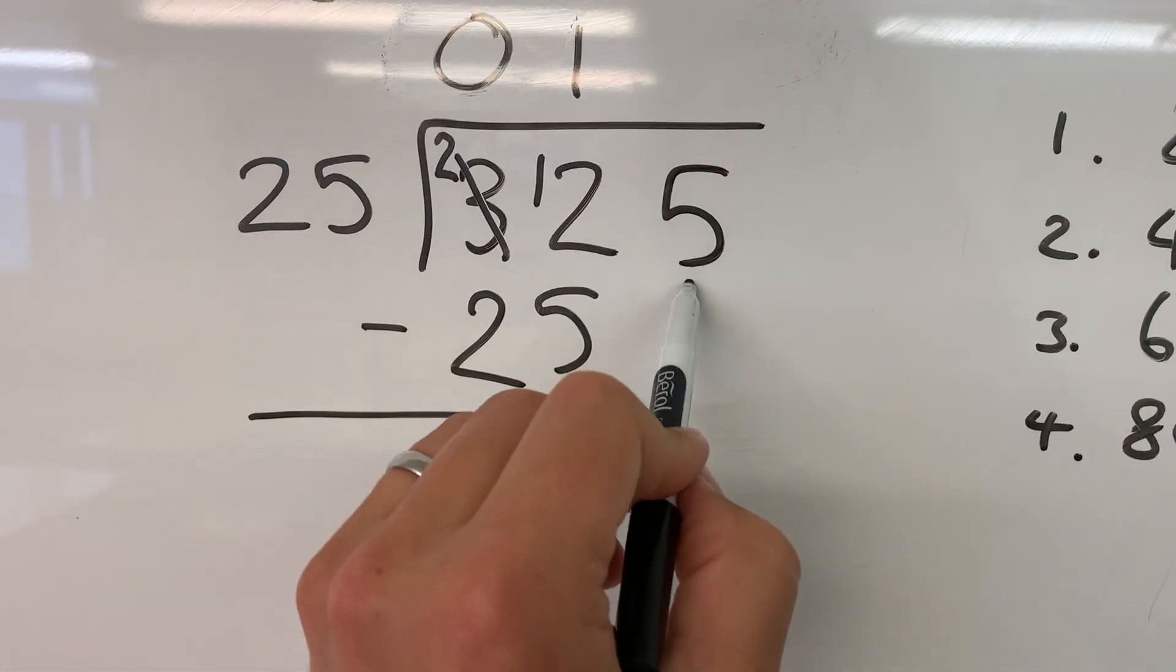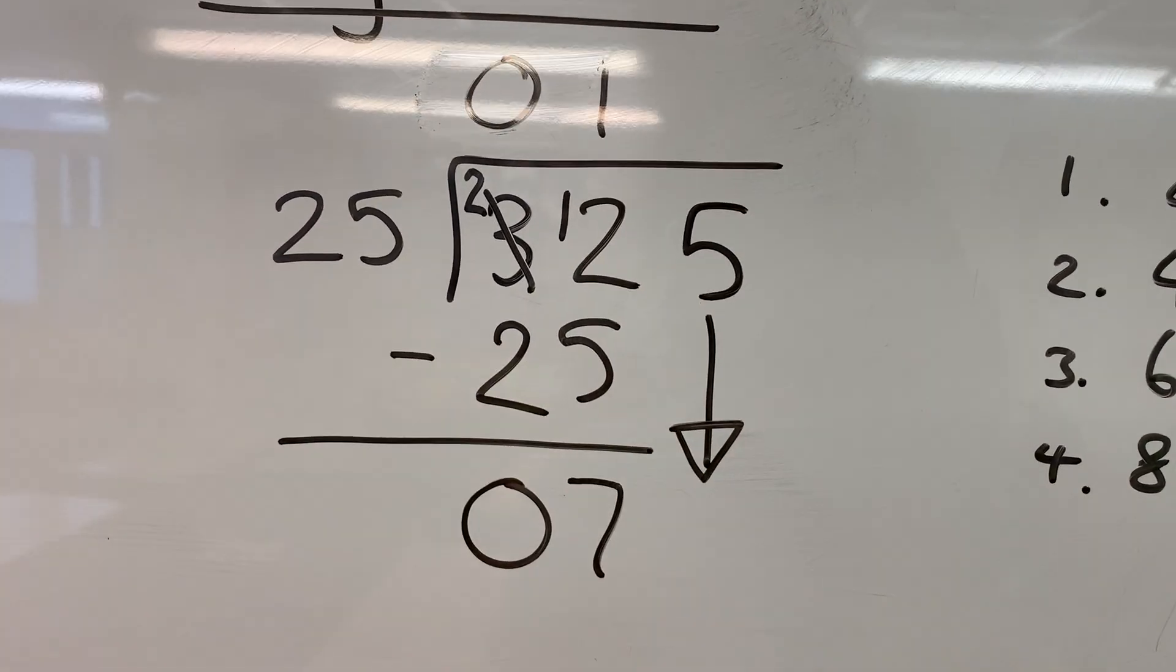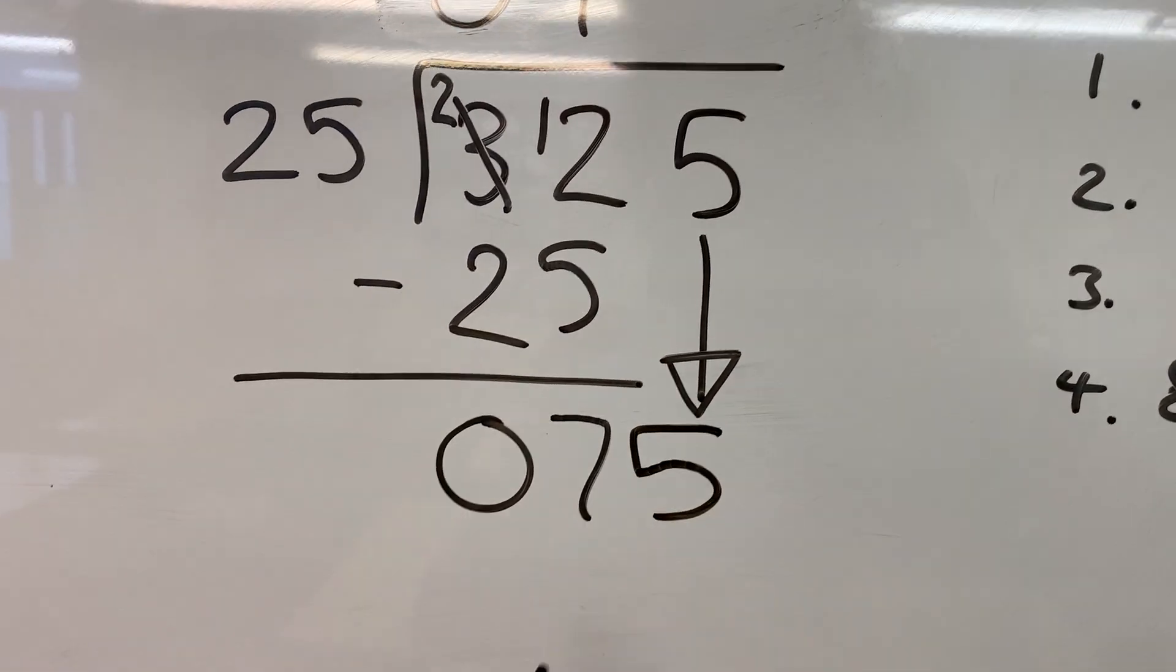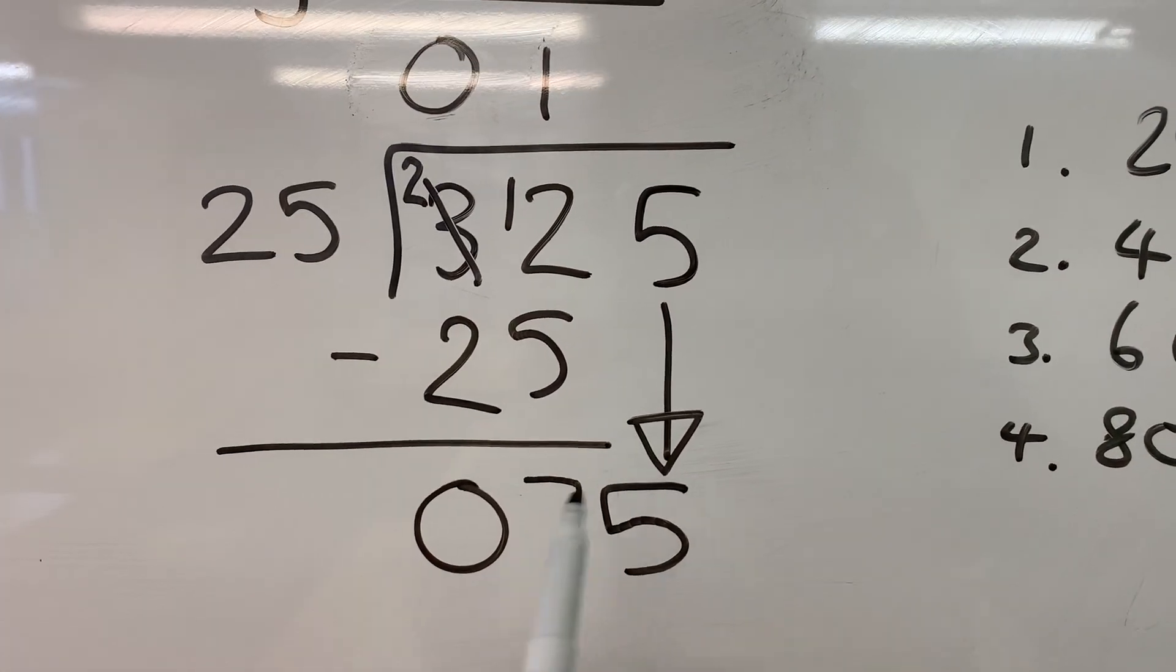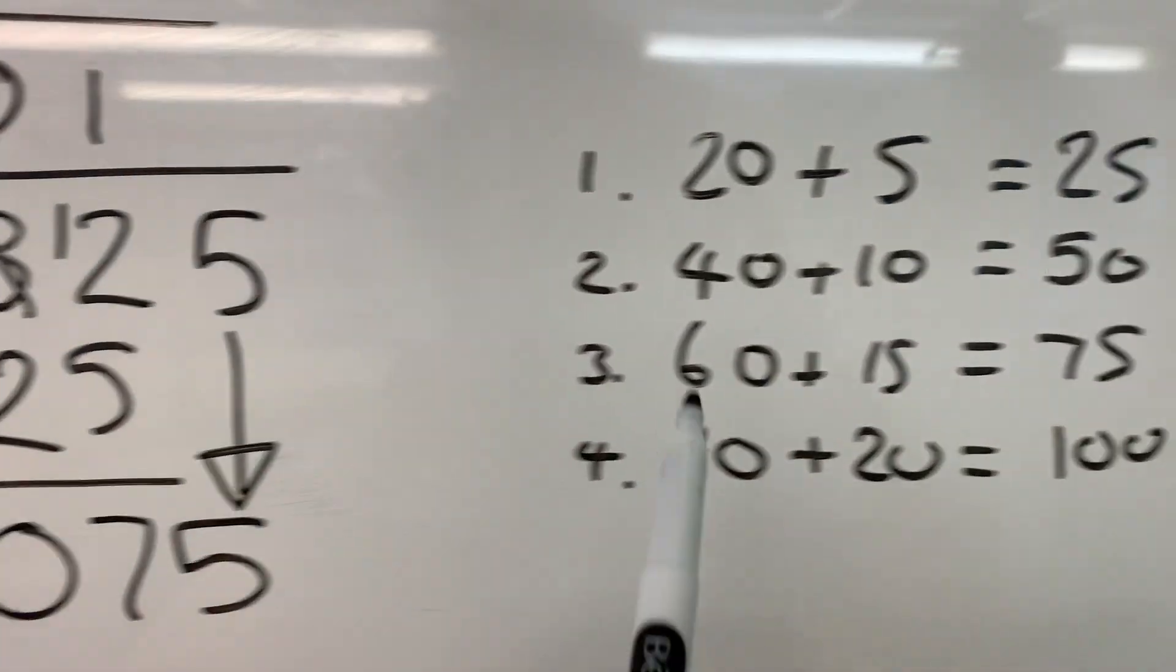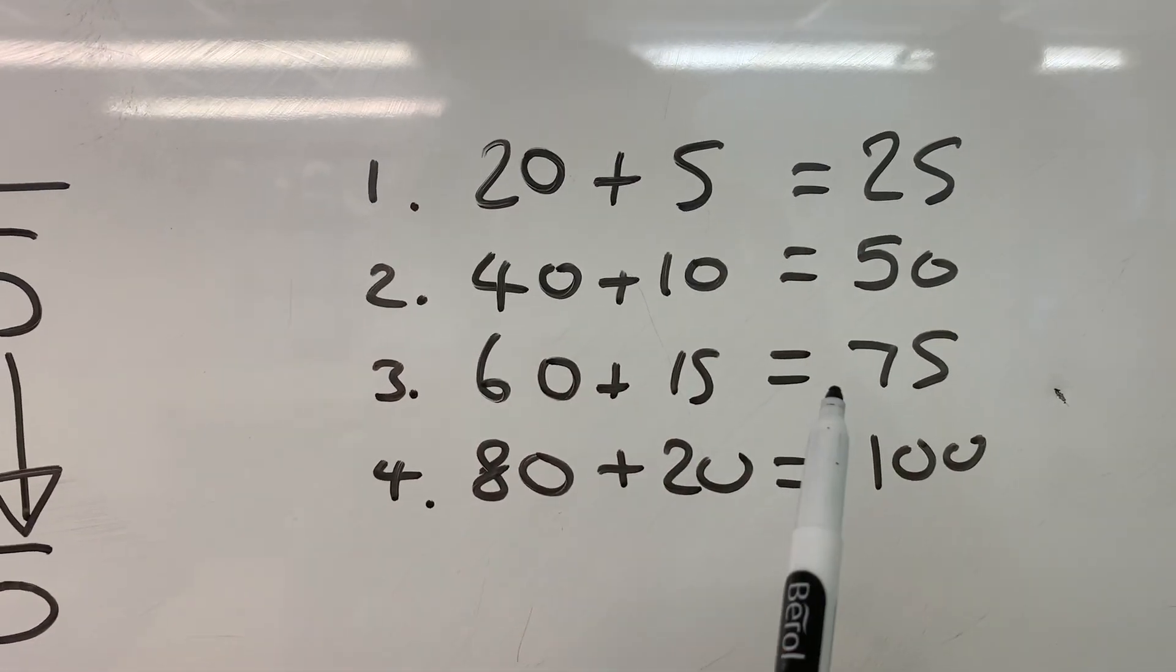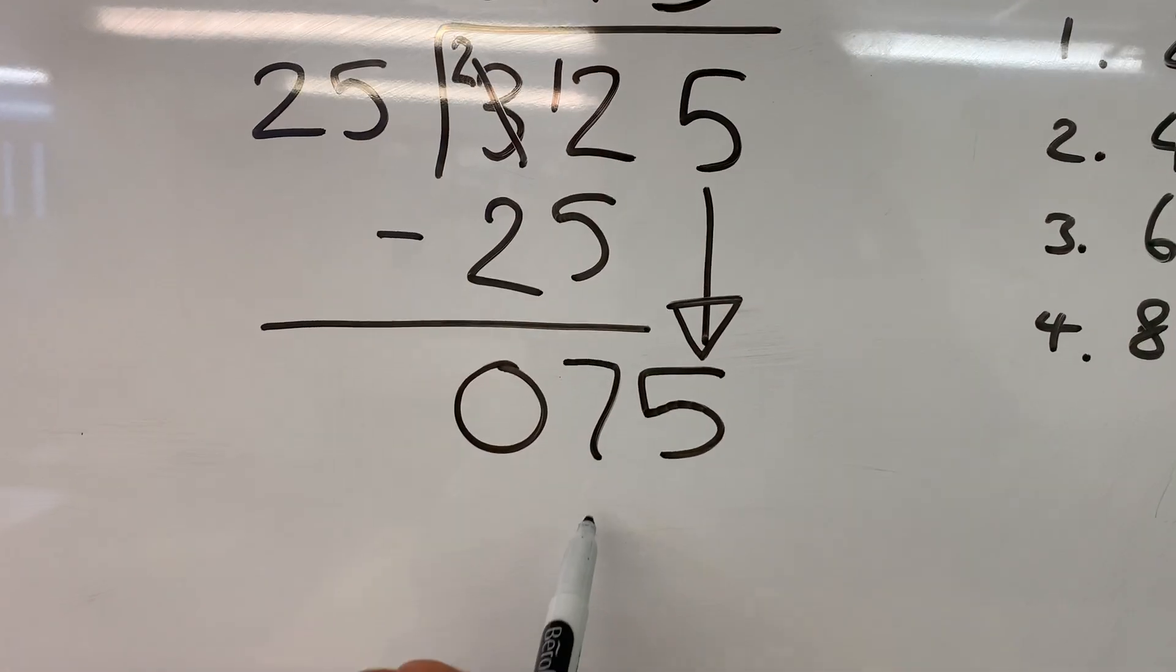Our next step is to bring this next number in the dividend down. We'll use an arrow to show that, and we get 75. So now we ask ourselves, this is our new dividend down here, how many times does 25 go into 75? Let's have a look. 1, 2, 3. So we put our answer up there, and the answer to that is 75.